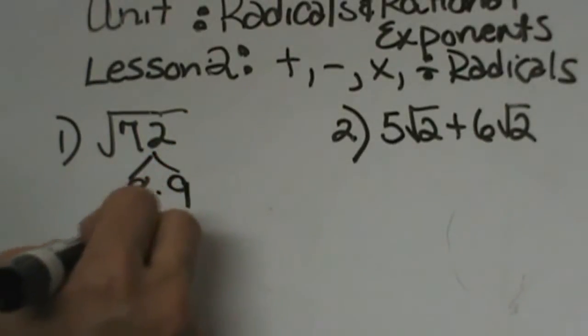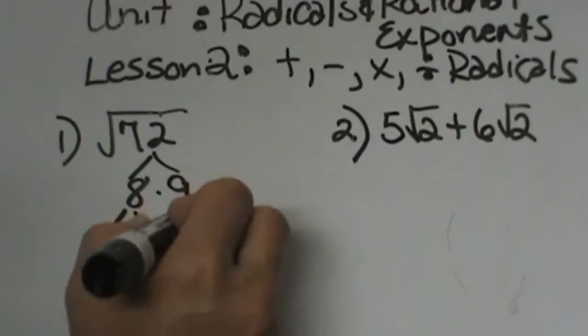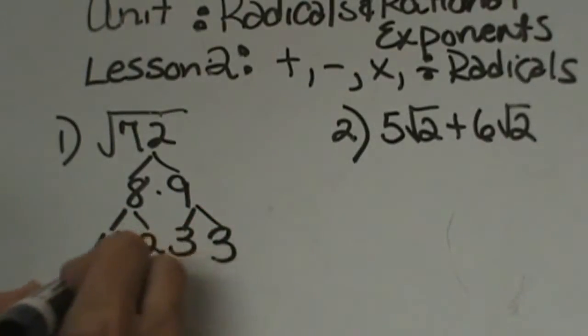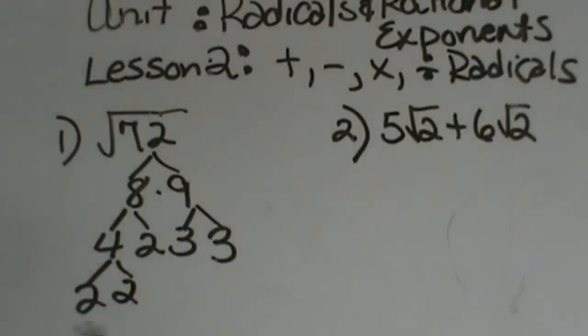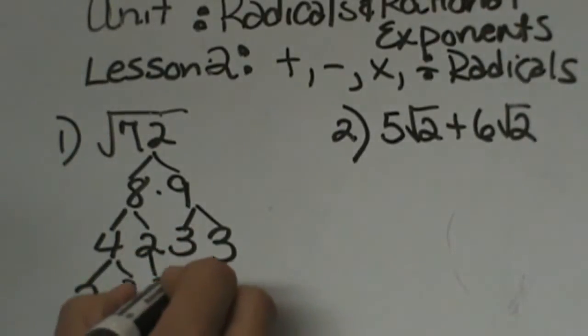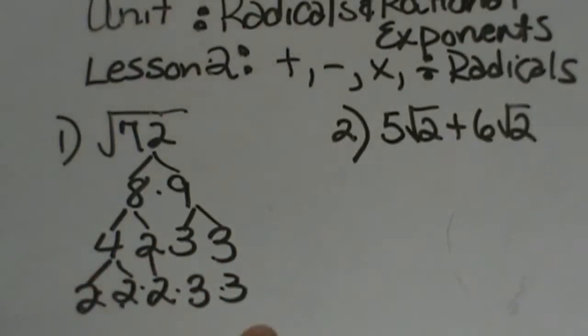8 factors down to 4 and 2 and 9 factors down to 3 and 3. 4 goes one more time to 2 and 2. My prime factors are 2 times 2 times 2 times 3 times 3. I actually have 5 factors down here.